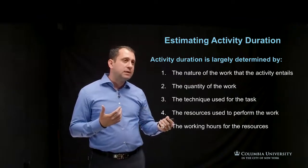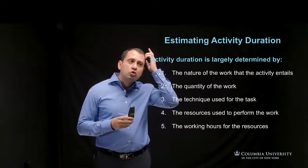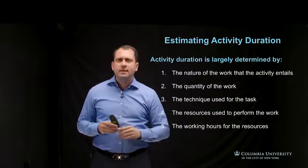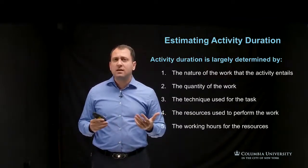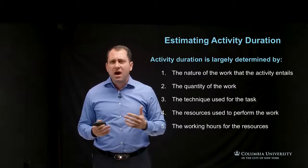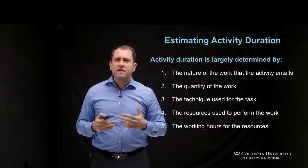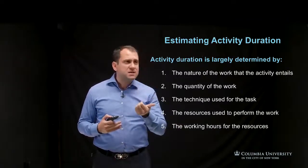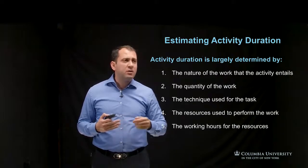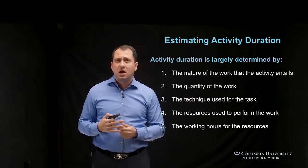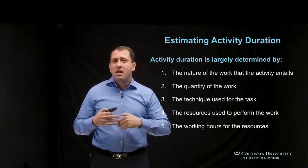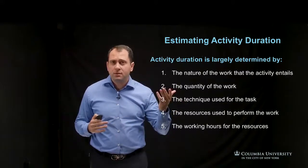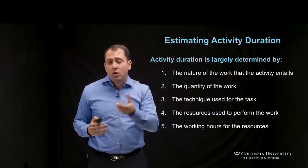Number four is the resources used to perform the work. For example, 20 masons will most likely finish the same amount of work faster than 15 or 12 masons. Another example: a larger fleet of scrapers will finish an earth-moving operation faster than a smaller one.